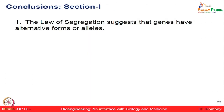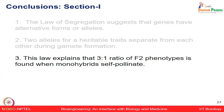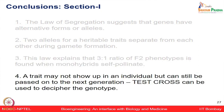From this section we can conclude that the law of segregation suggests genes have alternative forms — alleles. There are two alleles for a given trait which are heritable and can get separated during gamete formation. It also explains the approximate 3 to 1 ratio, and a trait may not show up in an individual but can still be passed to the next generation, detectable through a test cross.